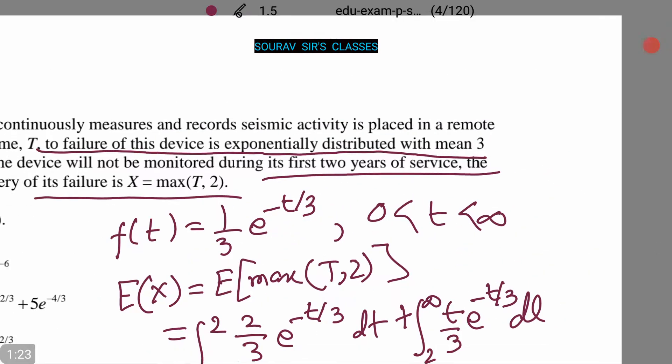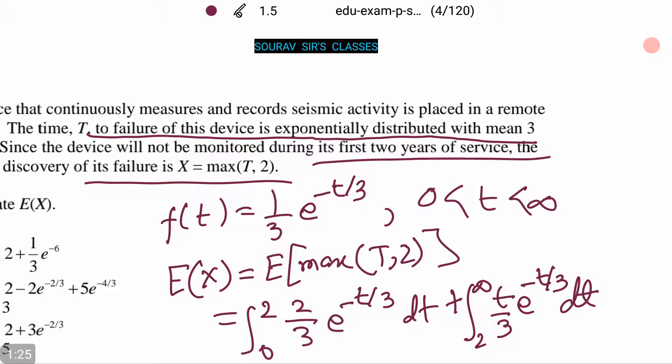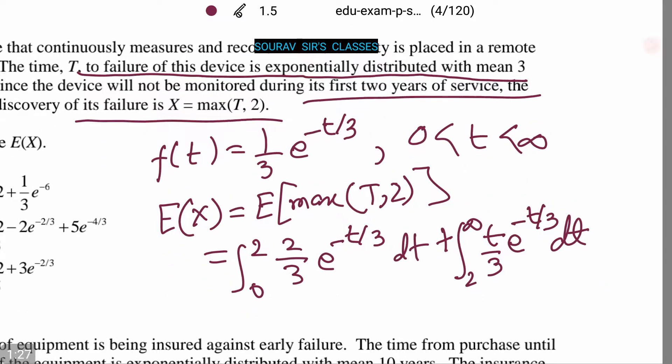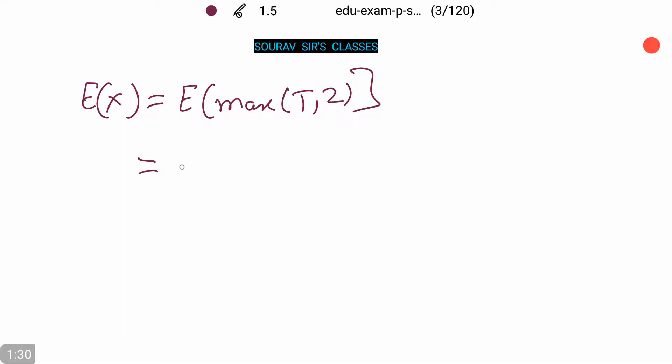Now let us simplify this further. That is minus 2e to the power minus t/3, evaluated from 0 to 2.